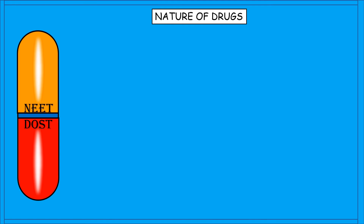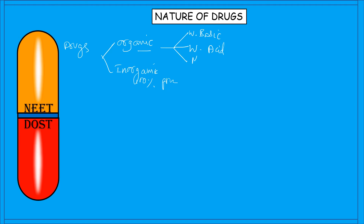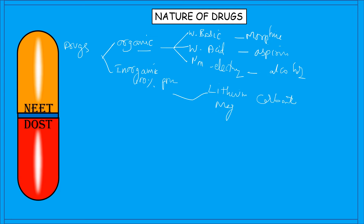Now let us discuss the nature of drugs. Drugs are classified into two types based on nature: organic and inorganic. Organic drugs are further classified into weakly basic drugs (e.g., morphine), weakly acidic drugs (e.g., aspirin), and non-electrolytes (e.g., alcohol). Inorganic drugs include examples such as lithium carbonate and magnesium carbonate.